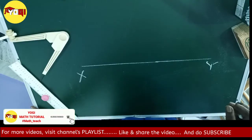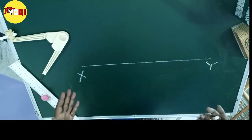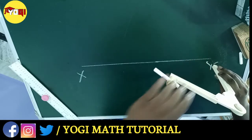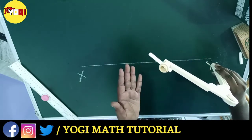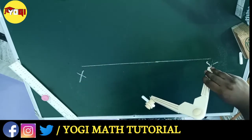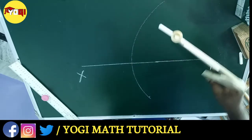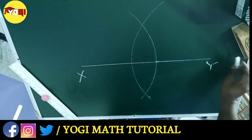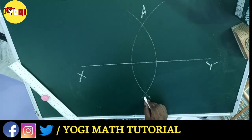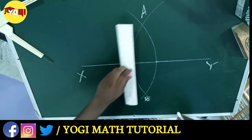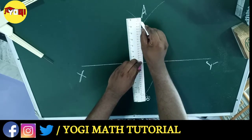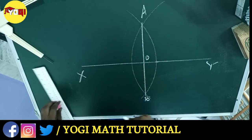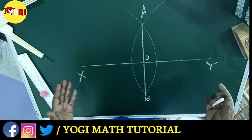Now we will discuss how a line segment is divided into four equal parts. First we take a line segment XY and bisect it using the previous steps. We take a radius greater than the line segment and draw two arcs from points Y and X. The arcs intersect each other at two points — we name them A and B — and join these two points with a scale. This line intersects the previous segment at O, so XY is now divided into two equal parts XO and YO.